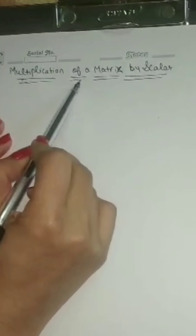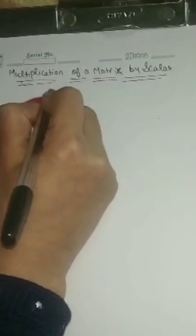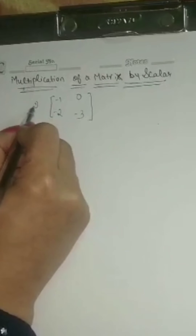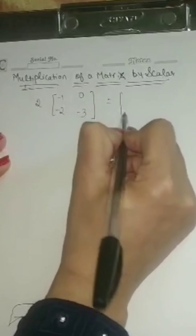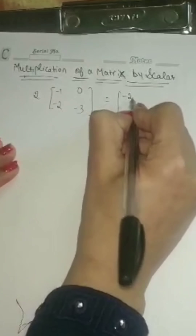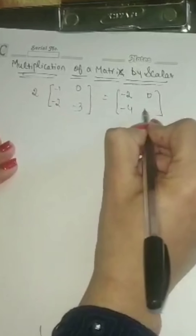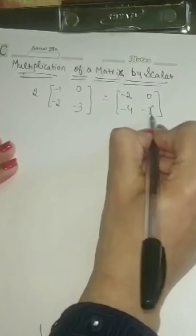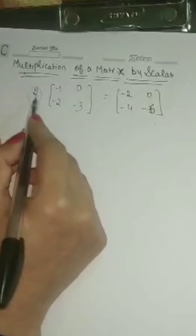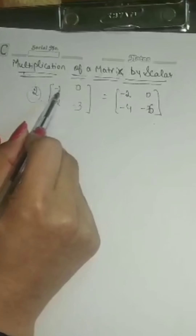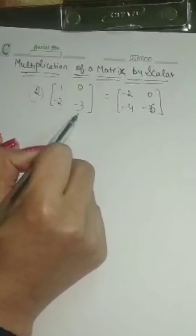Next we are going to discuss multiplication of a matrix by a scalar. For example, if I am having the matrix minus 1, minus 2, 0, minus 3 and I multiply 2 with this, then 2 gets multiplied with each and every element of the matrix, giving minus 2, minus 4, 0, minus 6.